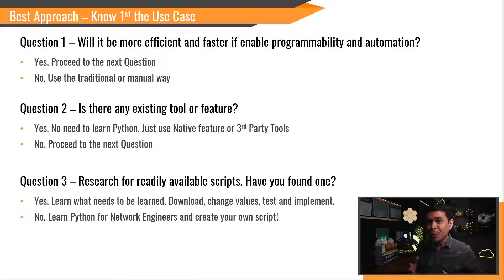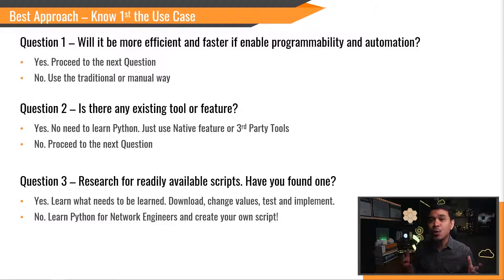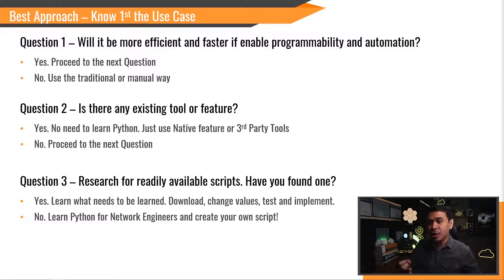Second question: do we really need Python network automation for this specific use case, or are there existing tools available? You need to do your own research. If you can't find any, proceed to the next question. Here's the last question: are scripts already available? If yes, this is when you start learning, but very minimal. As long as you understand the use case, requirements, and the network topology, you can just download available scripts, change the parameters such as IP address and credentials, and you are good to go. If there are no available scripts, this is when you need to start learning and create your own Python script.